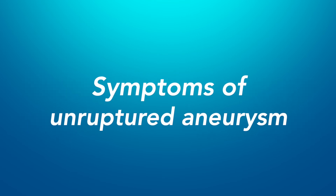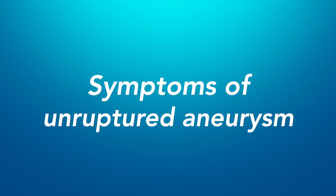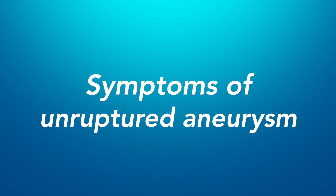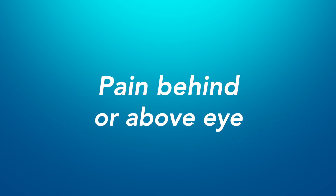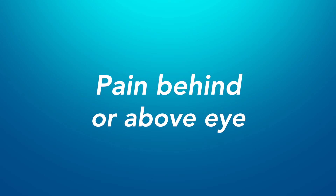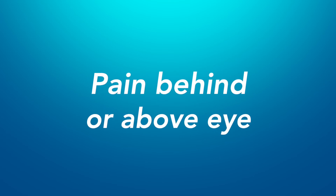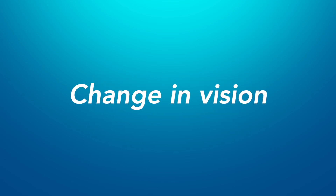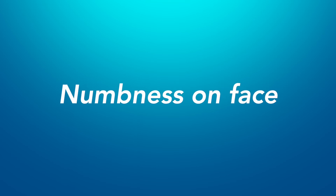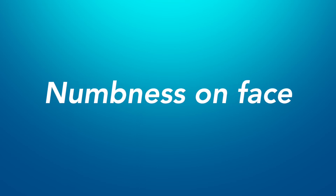An unruptured aneurysm often has no symptoms. But a larger one might press on brain tissues and possibly cause symptoms like pain behind or above one eye, a dilated pupil, a change in vision or double vision, or numbness on one side of the face.